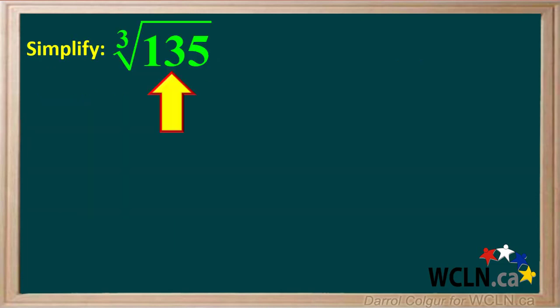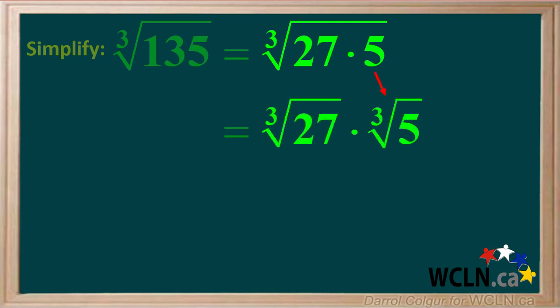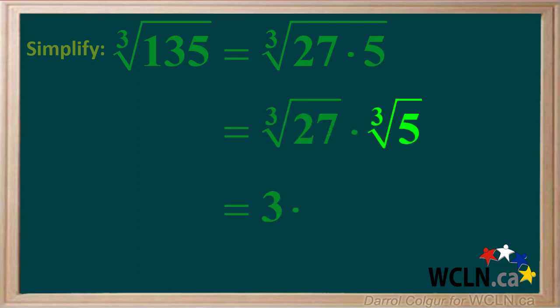Let's do an example. You're asked to simplify the cube root of 135. 135 can be factored to 27 times 5. The cube root of 27 times 5 can be broken down to the cube root of 27 times the cube root of 5. You might recognize 27 as a perfect cube — the cube root of 27 is just 3.